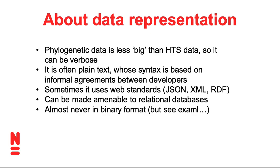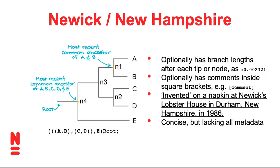Here's one format we've already seen: the Newick format, also sometimes called the New Hampshire format. That name comes from a dinner in 1986 at Newick's Lobster House in Durham, New Hampshire, where a bunch of developers of phylogenetic software sat down and invented the file format on a napkin. What it does is basically express tree shapes. For example, there's the tree shape A, B, C, D, E — where A and B form a clade, C and D form a clade, and E is an outgroup. The parenthetical statement describes that same shape.